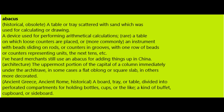Architecture: the uppermost portion of the capital of a column, immediately under the architrave — in some cases a flat oblong or square slab, in others more decorated. Ancient Greece, Ancient Rome: a board, tray, or table divided into perforated compartments for holding bottles, cups, or the like; a kind of buffet, cupboard, or sideboard.